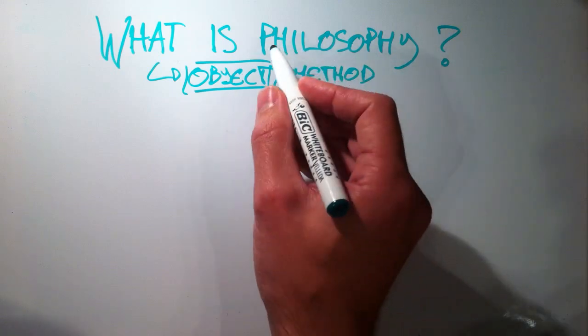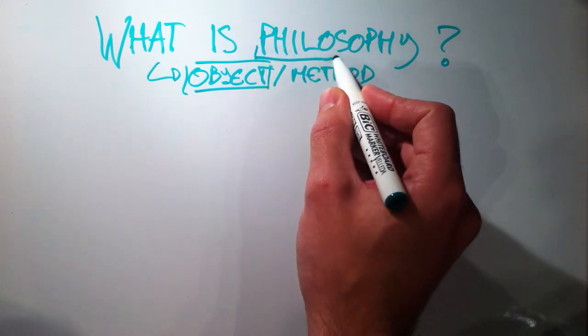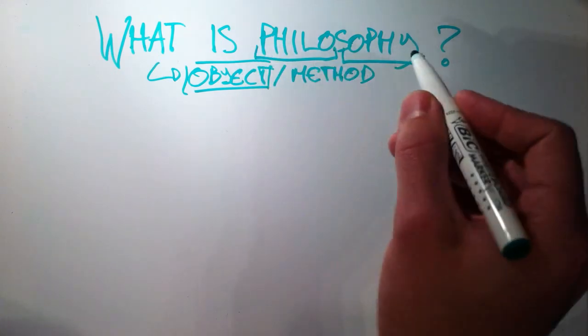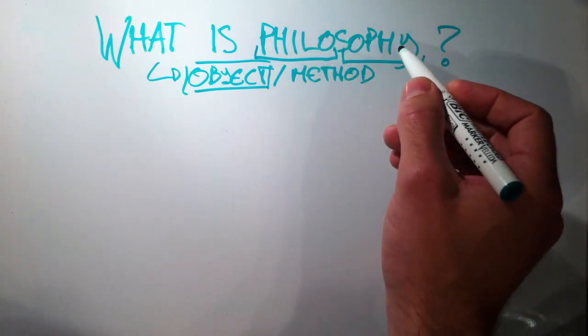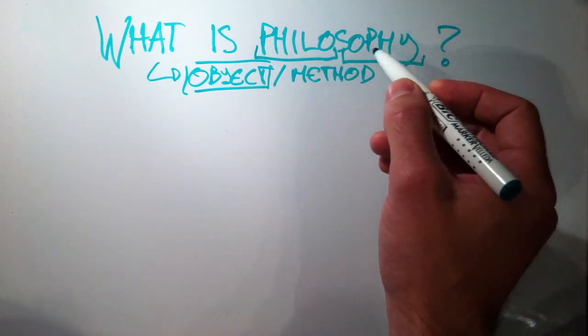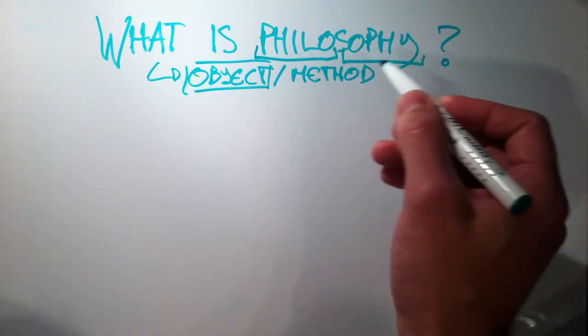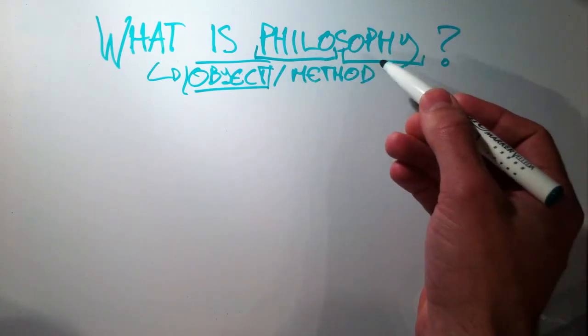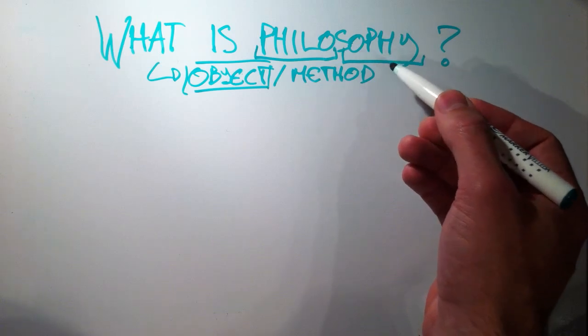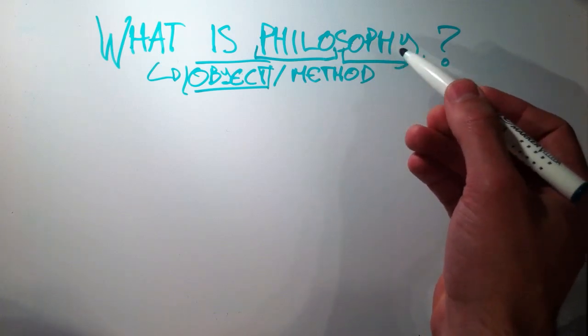If you look at the name itself, philo-so-fi, philo-so-fia, it refers to the love of wisdom, the friendship of wisdom. But that doesn't really help us much further, right? Wisdom about what? What's the object of this wisdom?